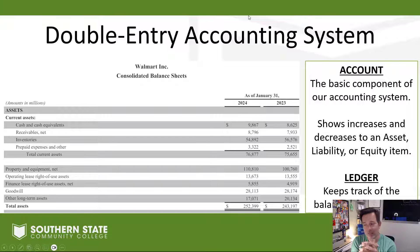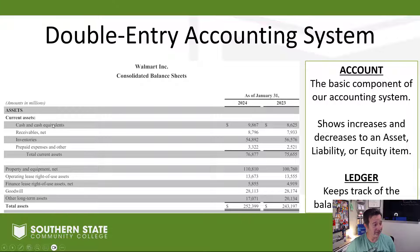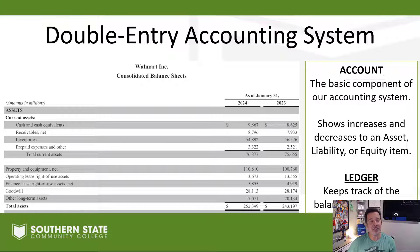The basic components of double-entry accounting are the account and the ledger. Accounts show increases and decreases to an asset, liability, or equity item. On the balance sheet you can see cash, accounts receivable, inventory, prepaid expenses, property, goodwill — all of these are accounts that we put numbers into. The ledger helps us keep track of all the balances across all the accounts.